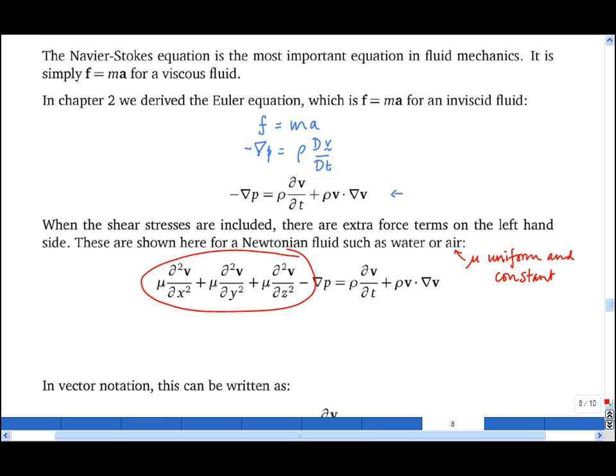This can be written as mu, open brackets, d2 by dx squared plus d2 by dz squared, all acting on V, the velocity field, minus grad P equals the same expression as above.